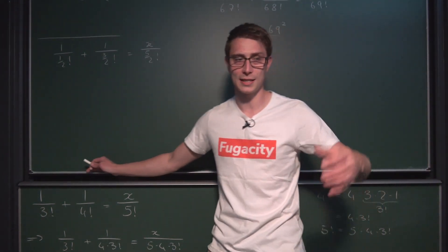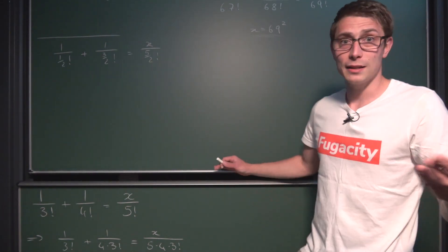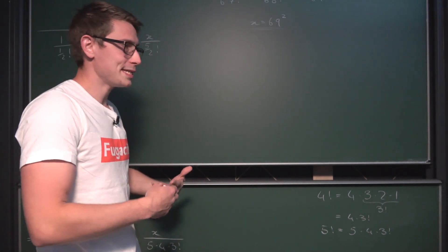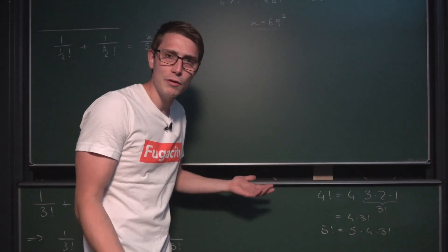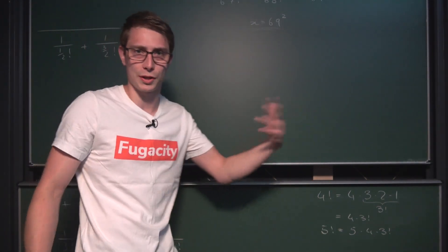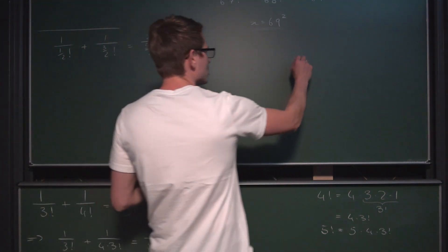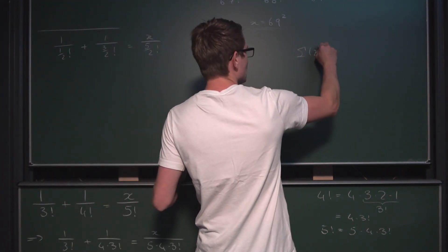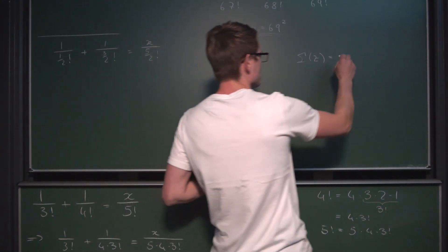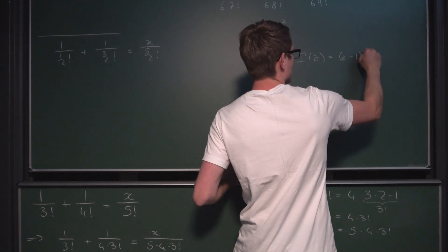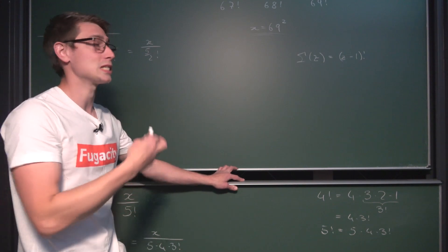If you're not familiar with the gamma function yet, take a look at my analytic number theory playlist. The gamma function is just a generalization to basically the whole complex plane, depending on your definition — be it the integral definition, the Gauss definition, or the Euler definition. In the general case, gamma of z is just a generalization of the factorial to non-integer values. Specifically, gamma of z equals z minus 1 factorial.